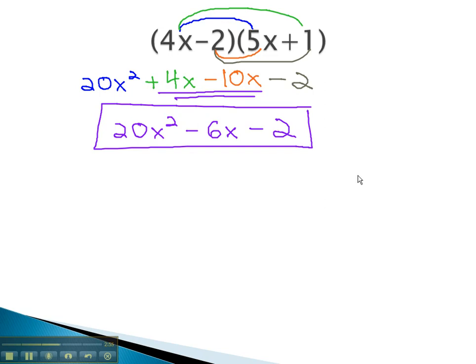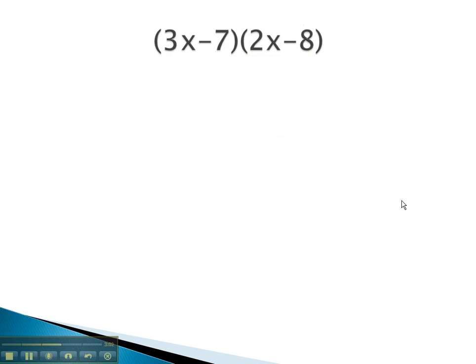Let's take a look at another example where we do this FOIL method, multiplying the first terms, the outside terms, the inside terms, and the last terms. F stands for first. Multiplying the first times the first gives us 6x squared.